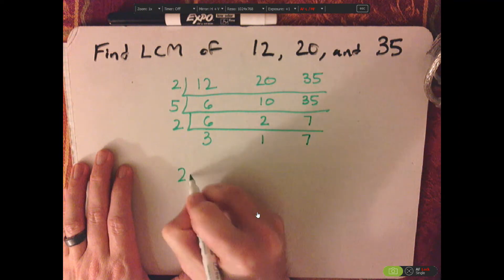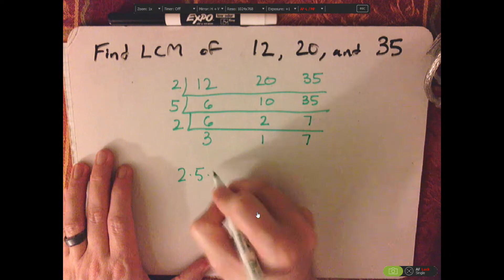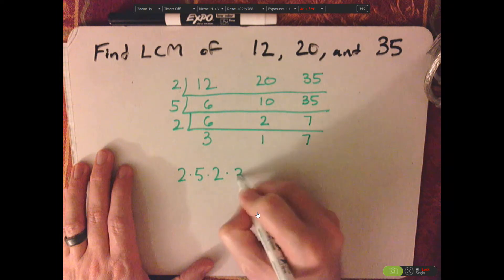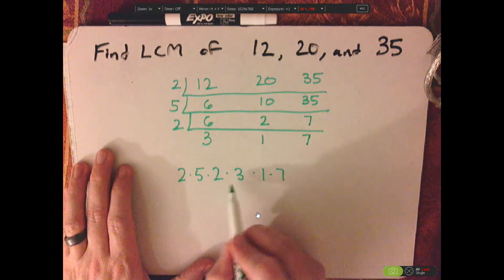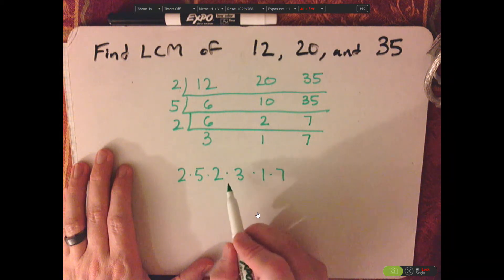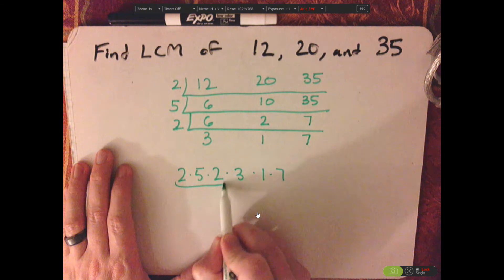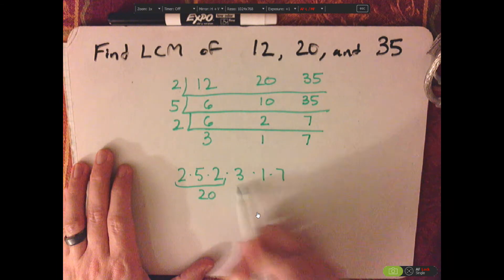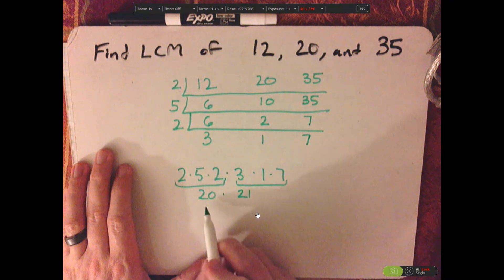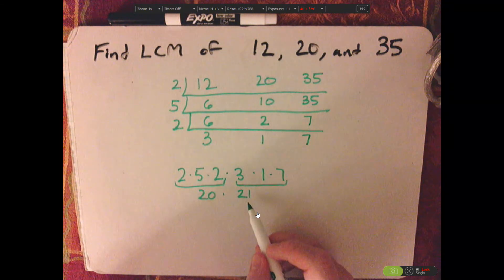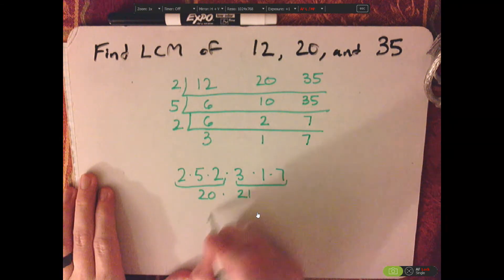So, that's 2 times 5 times 2 times 3 times 1 times 7. So, I'm going to do some selections here. This is 20, this is 21. So, 20 times 21 would be 420.